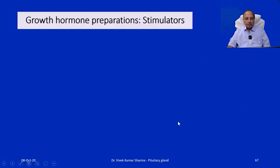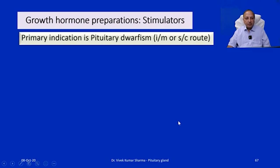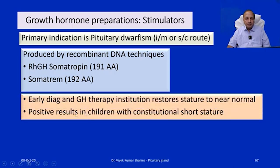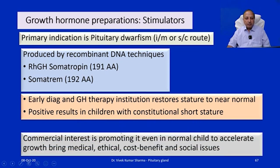Applied physiology — growth hormone preparations: the primary indication is pituitary dwarfism. Growth hormone is given by IM or subcutaneous route and is produced by recombinant DNA techniques. Somatropin or somatrem are usually given. Early diagnosis and institution of growth hormone therapy restores stature to near normal. Positive results are seen in children with constitutional short stature. However, there is abuse potential: commercial interests promote it even in normal children to accelerate growth, raising medical, ethical, cost-benefit, and social issues.